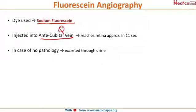This can be a question — kindly remember that it reaches the retina in approximately 11 seconds of injecting the dye into the antecubital vein. When there is no pathology, the dye will be excreted completely through the urine, and the patient will have dark orange colored urine for the next two days.